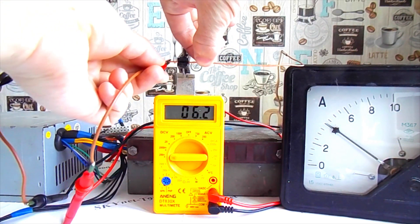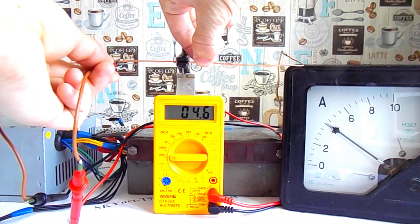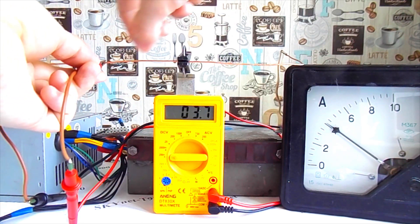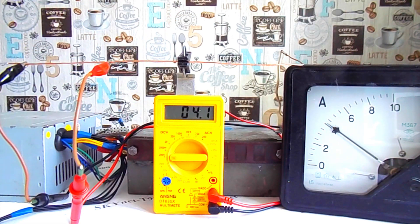If you measure a segment longer, then the voltage drop will be greater. Moving the crocodile, we need to achieve the same readings on the ammeter and multimeter. Thus, we calibrated the multimeter.